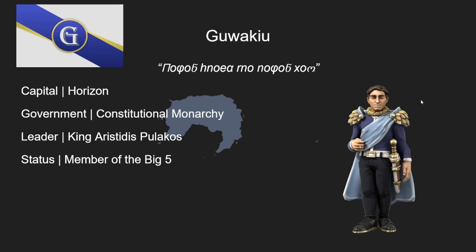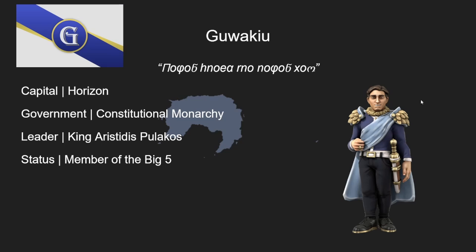This is in alphabetical order, so no particular order, just alphabetical. First up, the Kingdom of Guwaku, whose motto translates to 'honor those who honor you.' Guwaku is a large island nation located in northeastern Valscoria, led by King Aristides Pulakos as well as Prime Minister Lukas Vitrus. Guwaku is the home of Northern Orthodoxy, which is one of the main branches of Theosism, the other main branches being Reformed Theosism and Heretic Catholic Theosism.